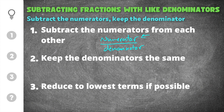The second important thing we need to remember is that we keep the denominators the same. That means when you subtract, you'll subtract the numerators from each other, and the denominator will remain the same because the denominators have to be equal in order to subtract fractions. Finally, the last thing you want to do is reduce your answer to the lowest terms if possible.